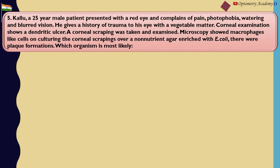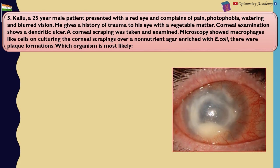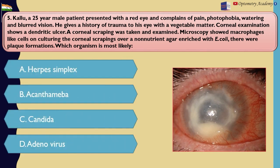Kallu, a 25-year male patient presented with a red eye and complaints of pain, photophobia, watering, and blurred vision. He gives a history of trauma to his eye with vegetable matter. Corneal examination shows a dendritic ulcer. A corneal scraping was taken and examined. Microscopy showed macrophage-like cells. On culturing the corneal scrapings over non-nutrient agar enriched with E. coli, there were plaque formations. Which organism was most likely? A. Herpes simplex. B. Acanthamoeba. C. Candida. D. Adenovirus.